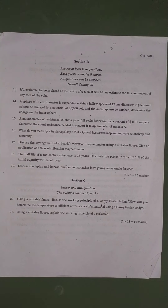18th question: The half-life of a radioactive substance is 15 years. Calculate the period in which 2.5% of the initial quantity will be left over.